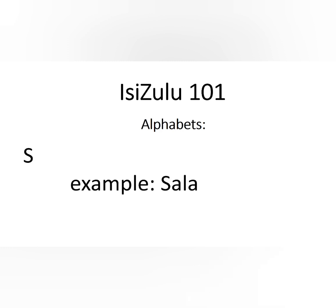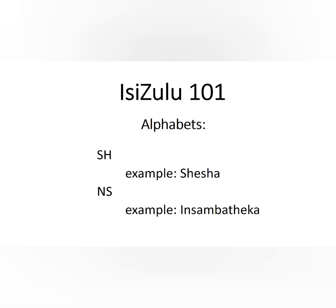The letter S is next. The example is 'sala' — for S it's just simple. 'Sala' means 'remain.' When we add an H after the S, we change the sound from S to SH. The example is 'shesha' — hurry up. And when we add an N before the S, it becomes NS. The example is 'insamba' — a strange story.